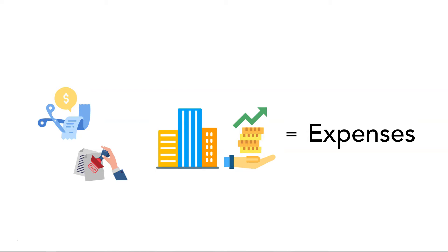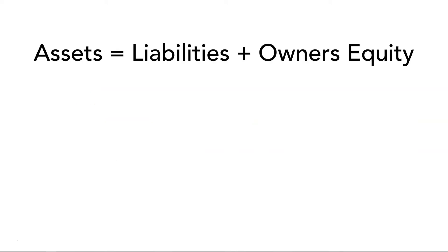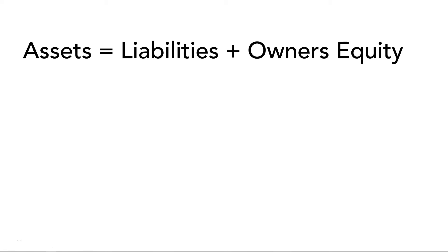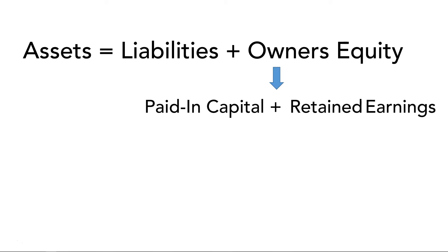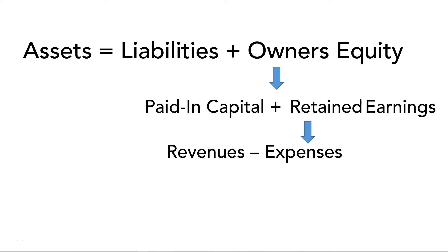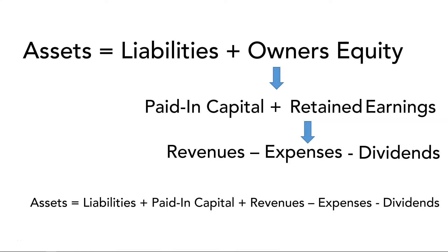Let's understand where exactly revenues and expenses fit in our accounting equation: assets equal to liabilities plus owners' equity. Owners' equity is comprised of paid-in capital — the amount of money directly invested by owners — and retained earnings, which are profits generated and left in the company from the beginning of time. Profits are calculated by subtracting expenses from revenues each year. Sometimes a portion of the profits is dispersed back to shareholders as dividends. So the expanded accounting equation becomes: assets equal to liabilities plus paid-in capital plus revenues minus expenses minus dividends.